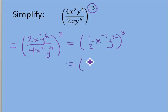So this would be equal to 1 half to the 3rd power, X to the negative 1 to the 3rd power, and Y squared to the 3rd power. By doing this, we're raising each piece to the 3rd power.